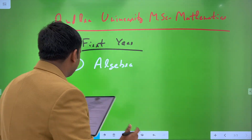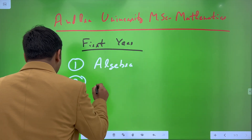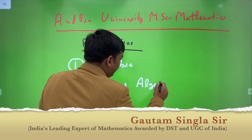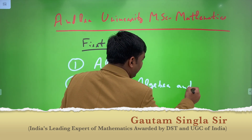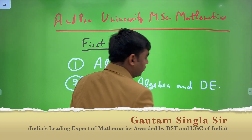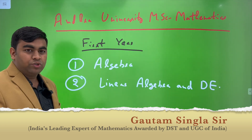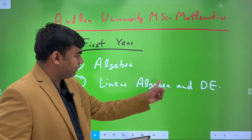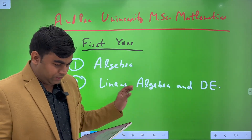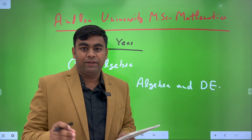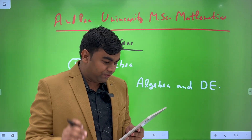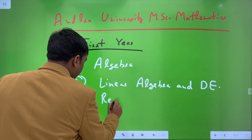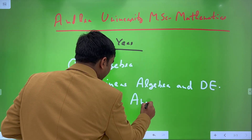Paper 2 in MSc Mathematics first year is Linear Algebra and Differential Equations. We are providing coaching for Paper 2 also, and the assignment solution for Paper 2 is available on our mobile application. Paper 3 for MSc Mathematics first year, Andhra University, is Real Analysis. We are also providing coaching for Real Analysis.